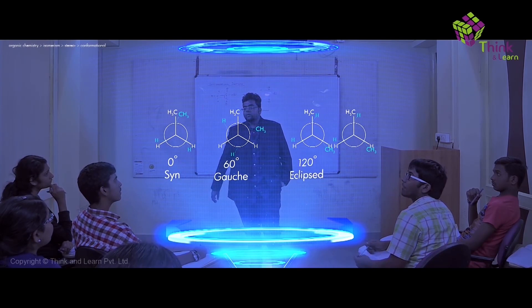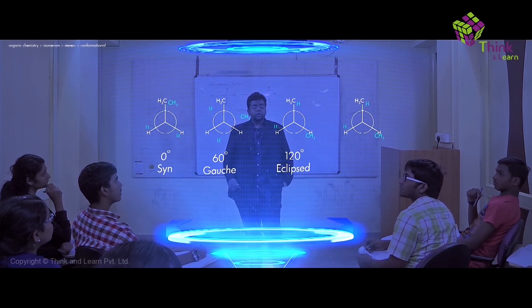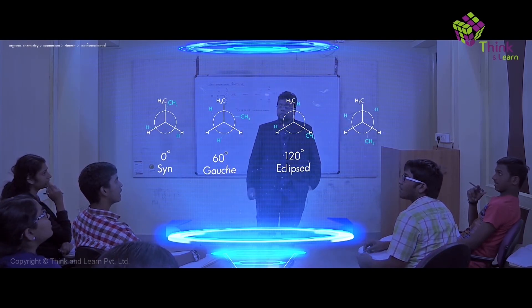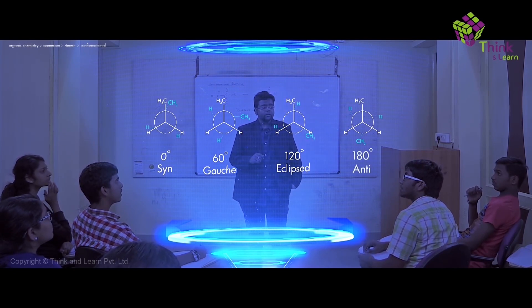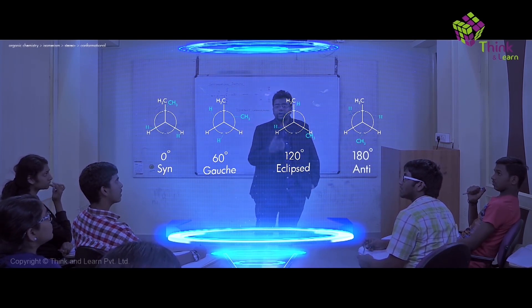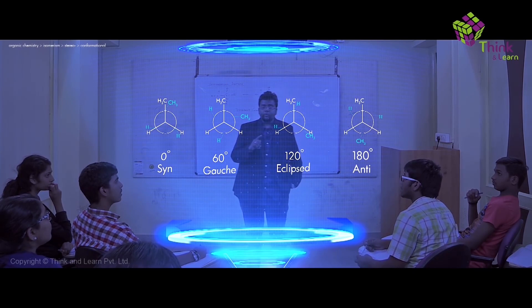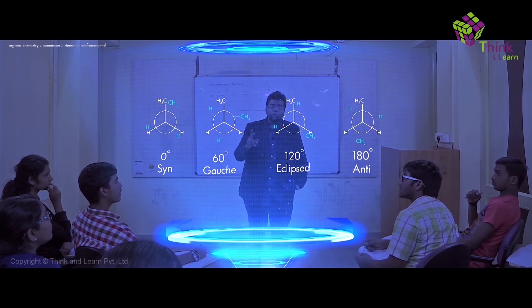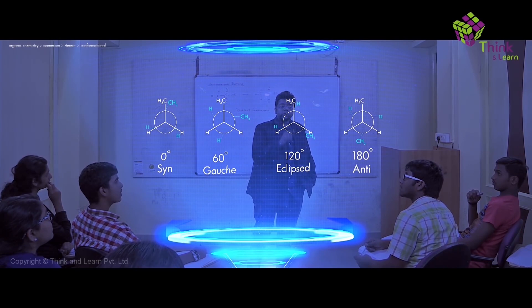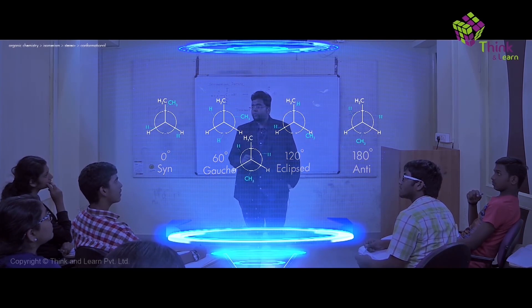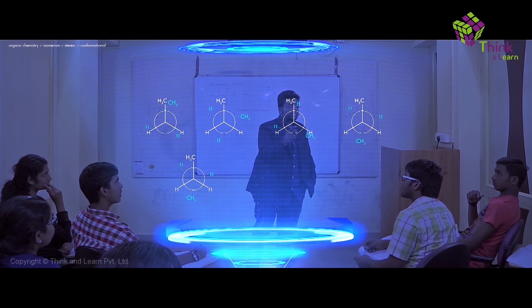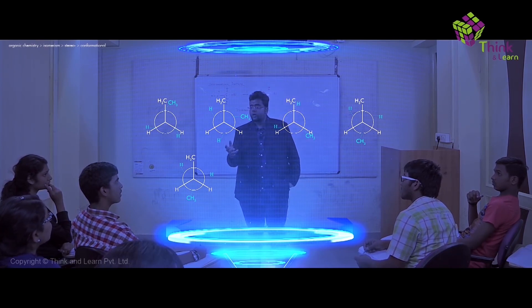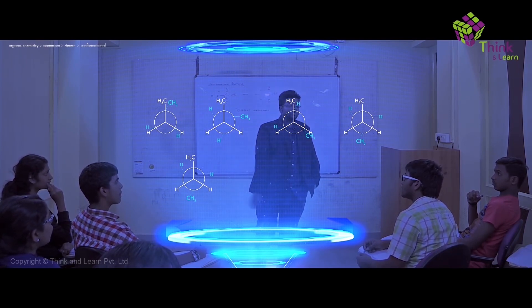Now if I move it by 60 degrees more, the dihedral angle is 180 degrees. This conformation is called the staggered conformation, and if you look carefully, CH3 and CH3 are both exactly opposite to each other, so this is called the anti conformation. So: fully staggered is anti, fully eclipsed is syn.